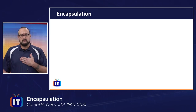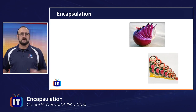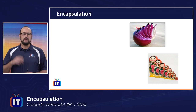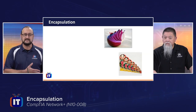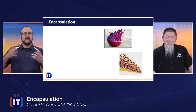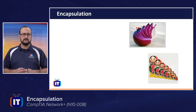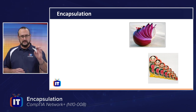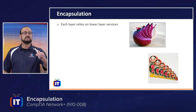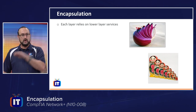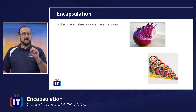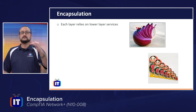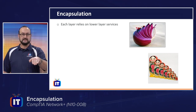One of the easiest ways to remember this concept is through a couple of pictures. Think about the onion, and also think about the Russian nesting dolls. Encapsulation really comes down to the fact that when we look at the OSI model, each layer is going to rely on the services of a lower layer. Going from top to bottom of the stack, the upper layer performs whatever service it needs to on the data, then relies on the layer below it to perform its services — and it doesn't need to be aware of it.